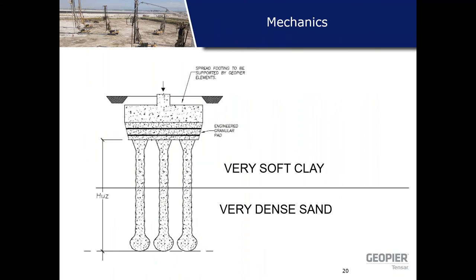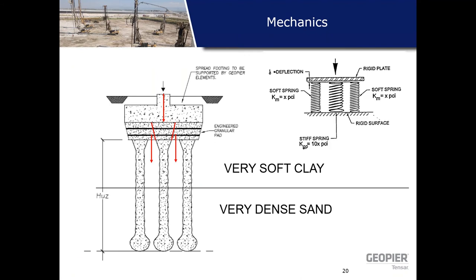Now for the mechanics — this is the fun part. In this diagram we have a shallow foundation supported on rigid inclusions. A rigid inclusion needs a gravel pad because it has no connection to the foundation. In this case we have very soft clay and high loads — conditions where you'd worry about bulging, so you want to transfer loads down to a dense bearing stratum. The load gets transferred from the foundation to the gravel pad, which compresses, and then the load can go either into the matrix soils below the foundation or into the pier.